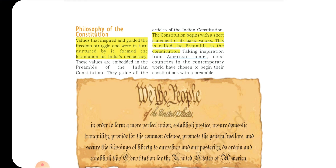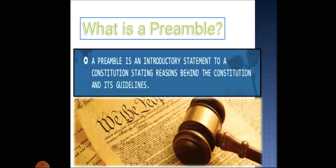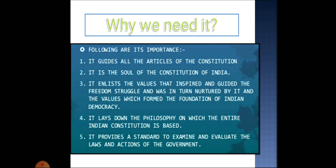The Constitution begins with a short statement of its basic values — this is called the preamble of the Constitution. Taking inspiration from the American model, most countries in the contemporary world have chosen to begin their Constitution with a preamble. So a preamble is a short introductory page of the Constitution which gives the idea of its basic values. Can you define the preamble in your own words? A preamble is an introductory statement to a Constitution stating the reasons behind the Constitution and its guiding values.